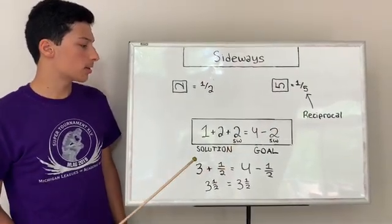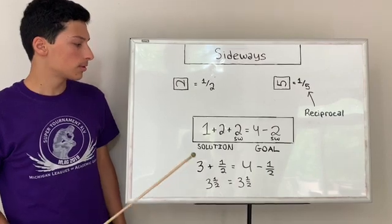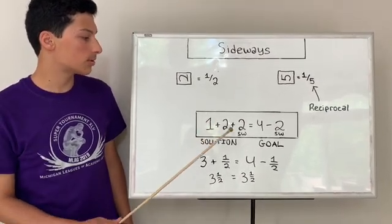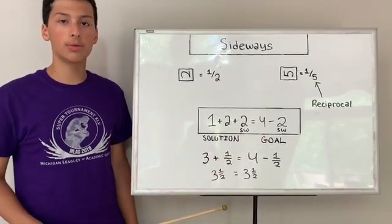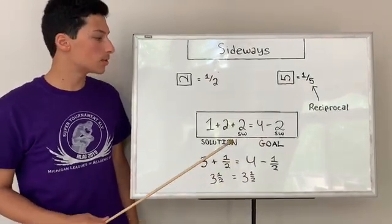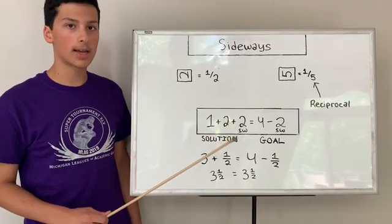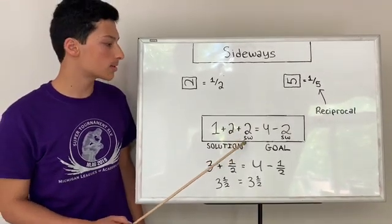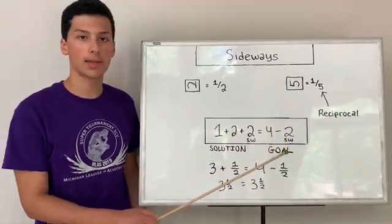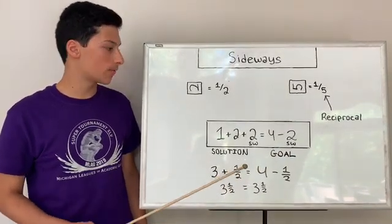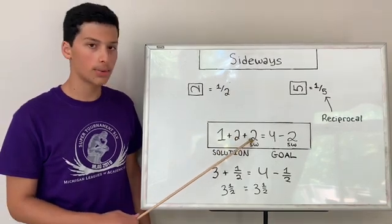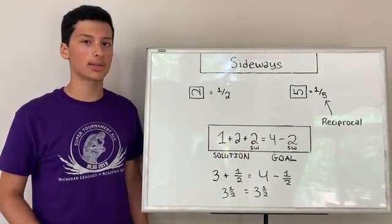If you look in this example here of solution equals goal, the solution is 1 plus 2 plus 2 sideways equals 4 minus 2 sideways. In a solution, you don't have to write the number sideways in your solution. You can just write SW underneath the cubes that you have sideways. You also don't have to make all of that cube sideways. For example, this 2 here isn't sideways and that one is sideways. You can choose which ones you want to make sideways.